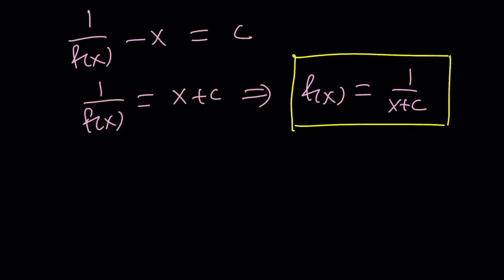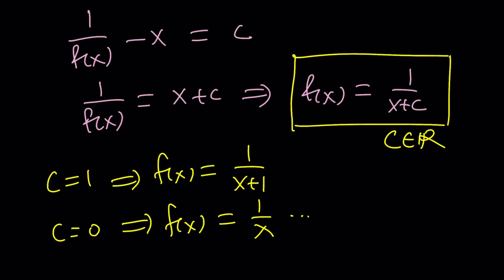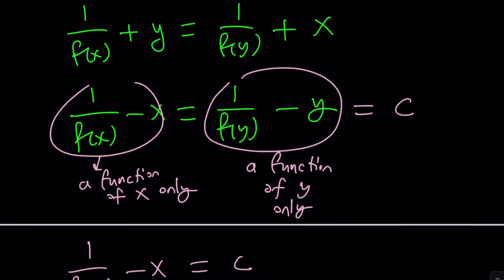What is c, though? C is a constant. Therefore, the only value x cannot be is negative c. For example, if c is 1, f of x equals 1 over x plus 1 is a solution. And its domain should exclude negative 1. If c is 0, f of x equals 1 over x is a solution. Again, this time, you would exclude 0. Depends, right? But that's a general solution. C is a real number. Can it be a complex number? Probably. You go ahead and check it out.